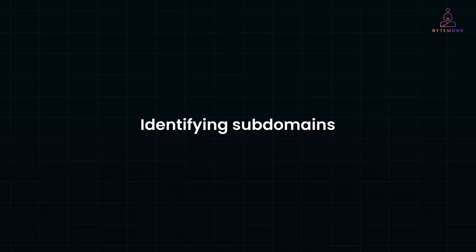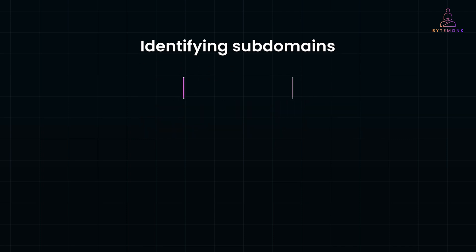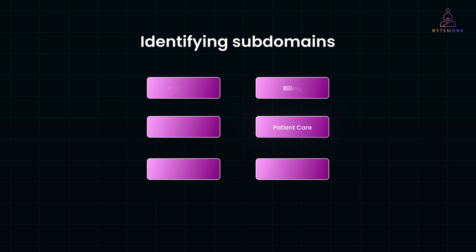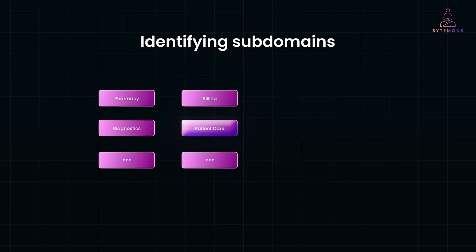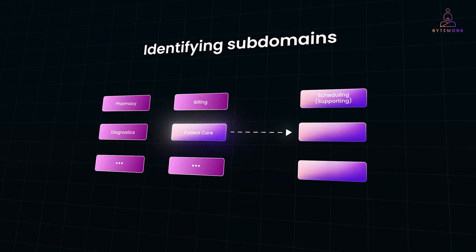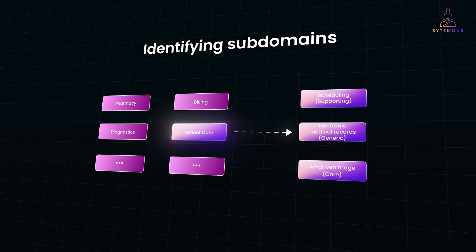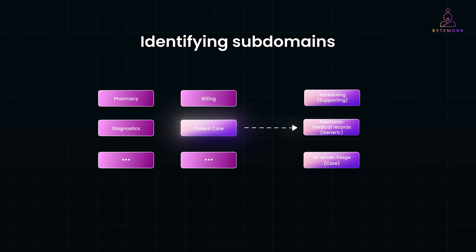Identifying subdomains is crucial for making informed design decisions. Consider a hospital — it might have departments like patient care, billing, pharmacy, and diagnostics. Digging deeper reveals finer components. Take the patient care department: it may involve scheduling, maintaining electronic medical records, and a unique AI-driven triage system. If the triage system analyzes symptoms and assigns patients to specialists more effectively than competitors, it becomes a core subdomain, offering a distinct advantage in healthcare delivery.